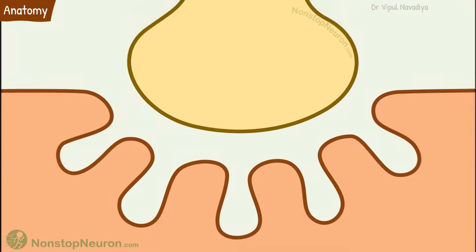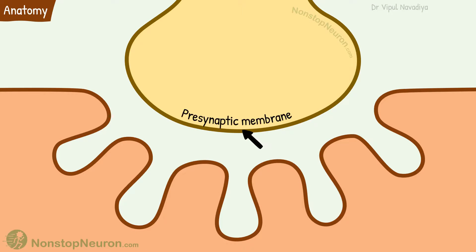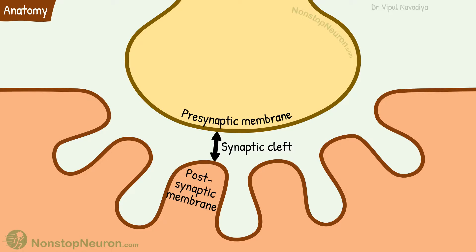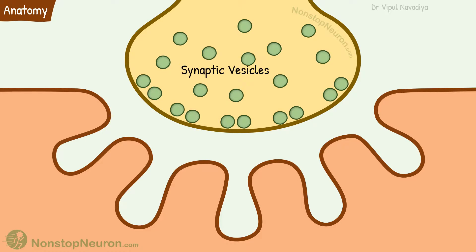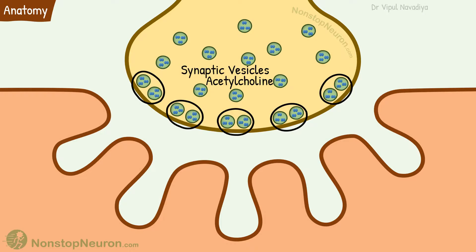This is the presynaptic membrane, which is the nerve terminal. This is the postsynaptic membrane from the muscle fiber. And the space in between the two is called the synaptic space or synaptic cleft. The nerve terminal has a large number of synaptic vesicles that store the neurotransmitter acetylcholine. Their fusion with the membrane occurs at specific regions called active zones, where synaptic vesicles are closely clustered in opposition to the membrane.